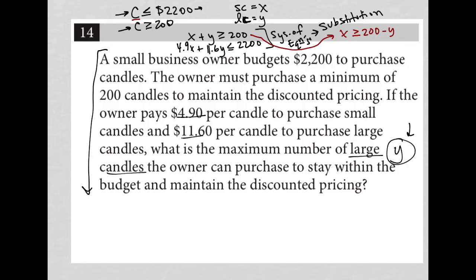In doing that, that allows me to turn my second inequality into 4.9. Now, instead of X, I can replace that with 200 minus Y plus 11.6Y is less than or equal to 2200. And that's what I'm going to solve, right? So I'm going to go down to the bottom here where I have more space.